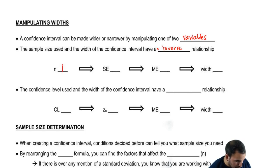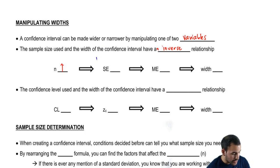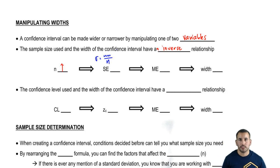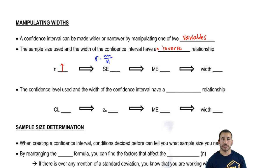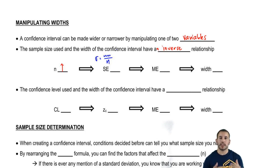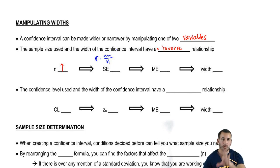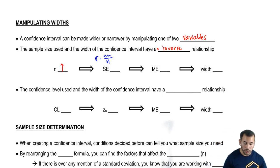So, sample size goes up — what happens to standard error? Remember, standard error is always divided by n. For example, standard error for the mean is standard deviation over square root of n, and standard error for proportions is square root of pq over n. So n is always on the bottom. If n gets bigger and it's on the bottom, that means standard error goes down.